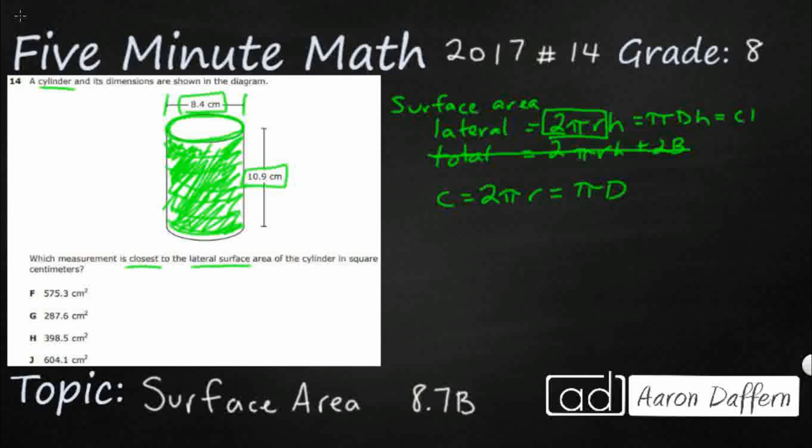All right, so circumference times the height. But they go ahead and spell it out because we might not have that circumference equation memorized. All right, so let's find the circumference. So I'm going to stick with this π times diameter, just because they've already given us the diameter.